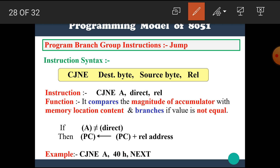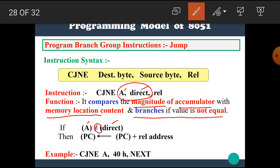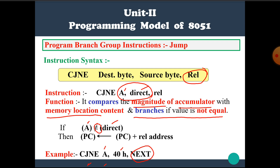The first CJNE addressing mode is CJNE A, direct, relative — a comparison between accumulator and a direct memory address. It compares the magnitude of the accumulator with the memory location content and branches if the value is not equal. For example, CJNE A, 40H: the accumulator has some data and memory location 40H has some data. If both values are equal, then jump to the relative address; otherwise continue.